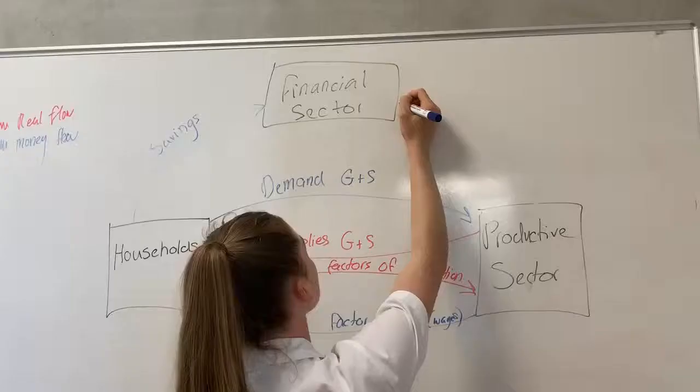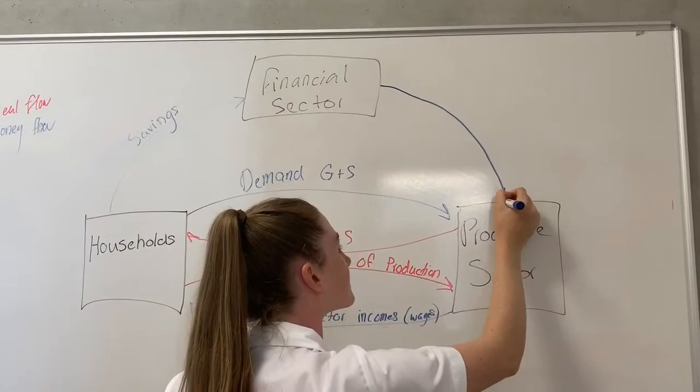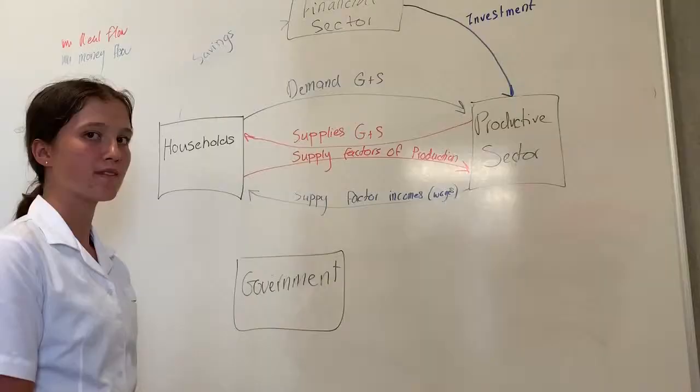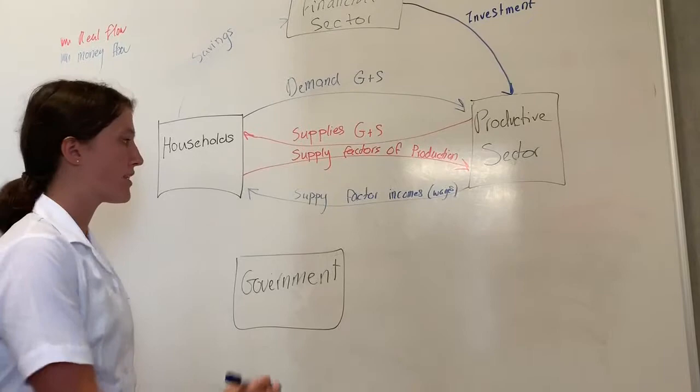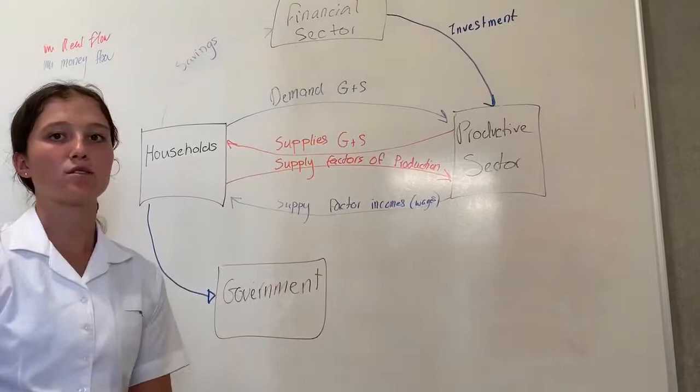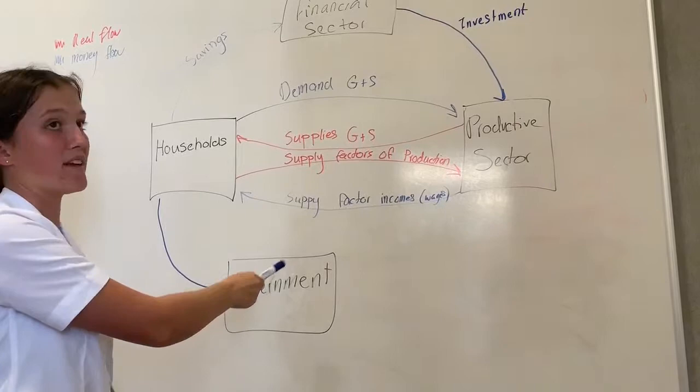The financial sector invests in the productive sector to ensure economic growth. When the households earn their wages, an automatic payment comes out of their income into the government — this is called income tax, known as Pay As You Earn, P-A-Y-E.